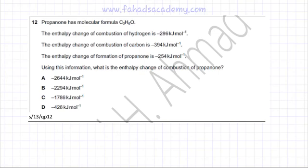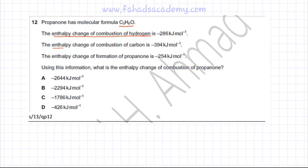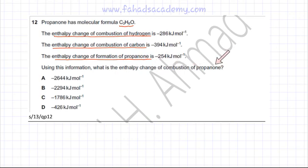This chemical energetics question is related to Hess's Law. Propanone has the molecular formula C₃H₆O. You are given the enthalpy change of combustion of hydrogen, the enthalpy change of combustion of carbon, and the enthalpy change of formation of propanone. You are asked to use this information to find the enthalpy change of combustion of propanone.